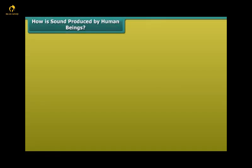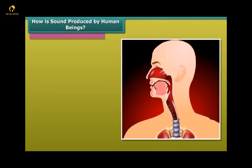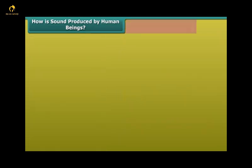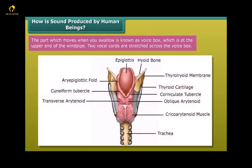How is sound produced by human beings? Voice box in human. Sound is produced by the voice box or the larynx in humans. The part which moves when you swallow is known as voice box, which is at the upper end of the windpipe. Two vocal cords are stretched across the voice box.